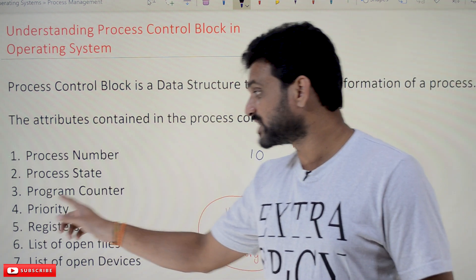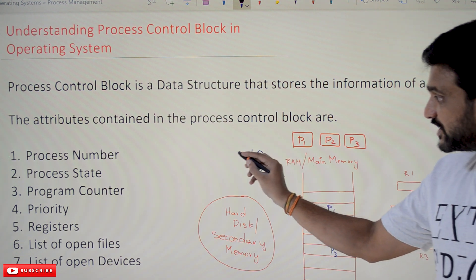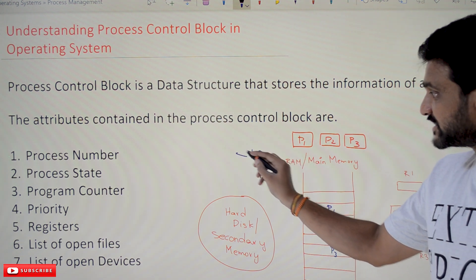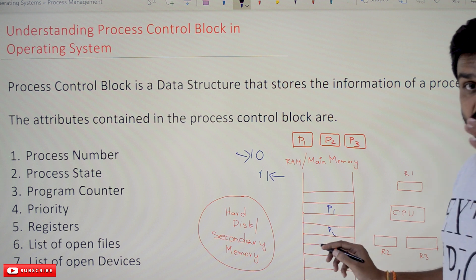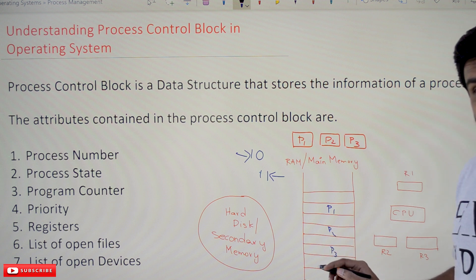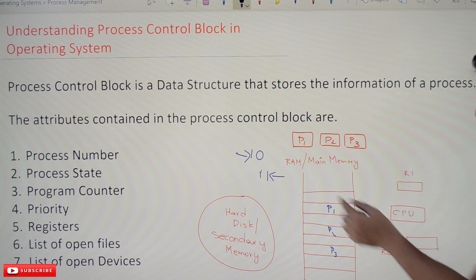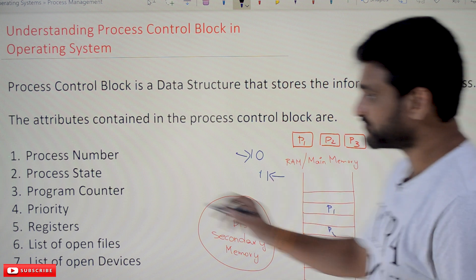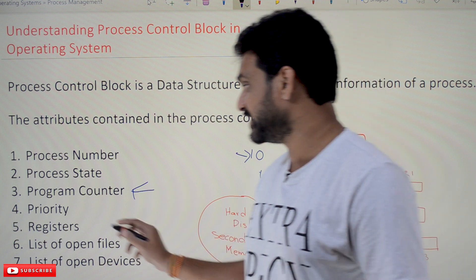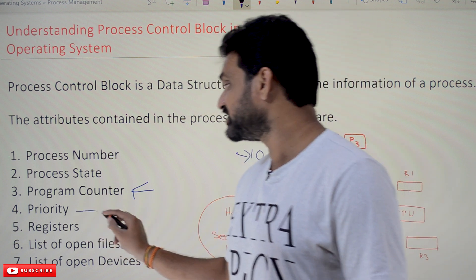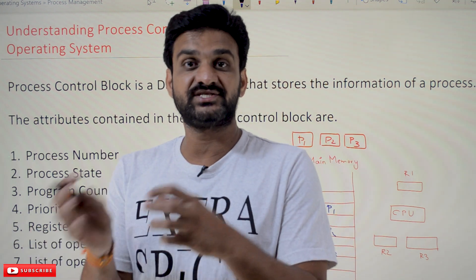The next attribute is Program Counter. For example, if at the 10th instruction we shifted from running state to ready state, then the next instruction to be executed after coming back to execution is the 11th instruction — that is what we call the program counter. The program counter has to be maintained. The next one is priority: every process will have a priority.